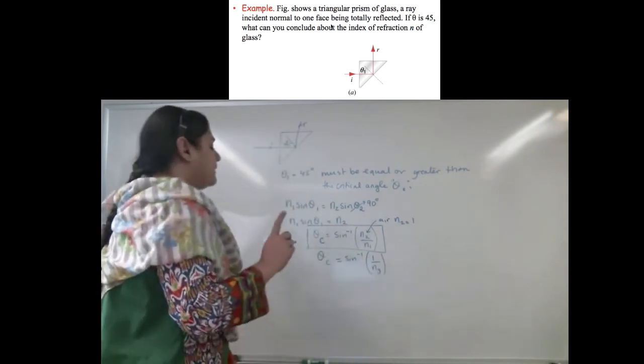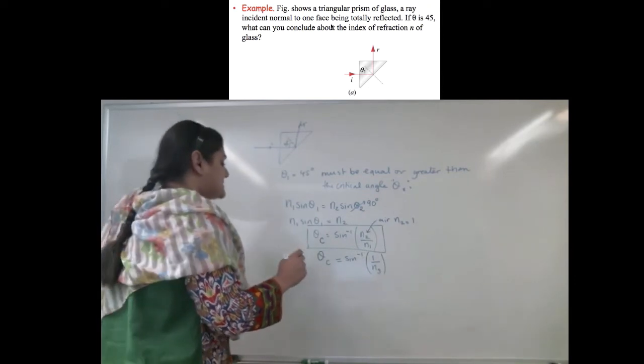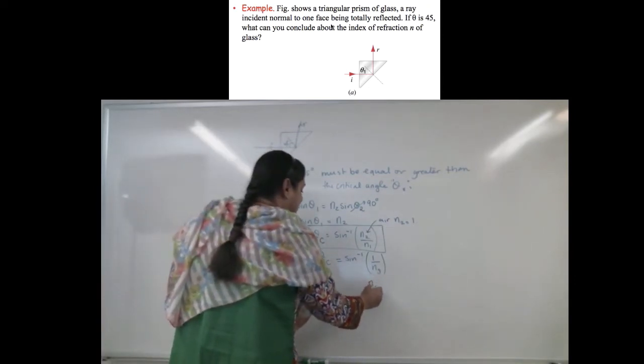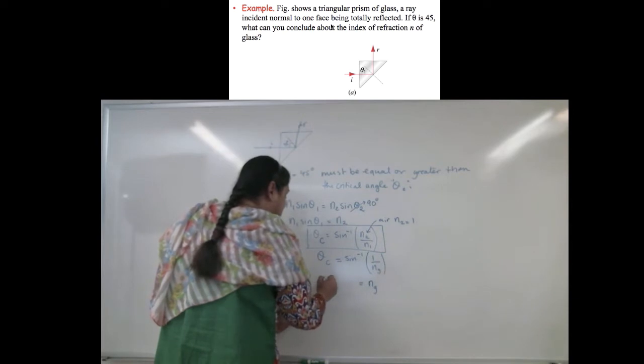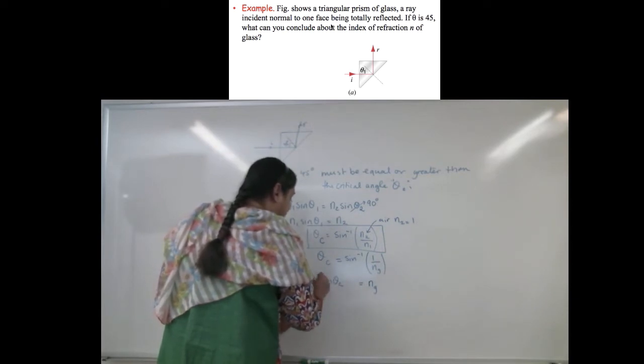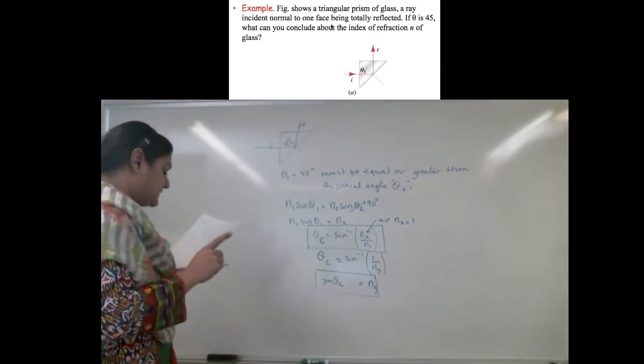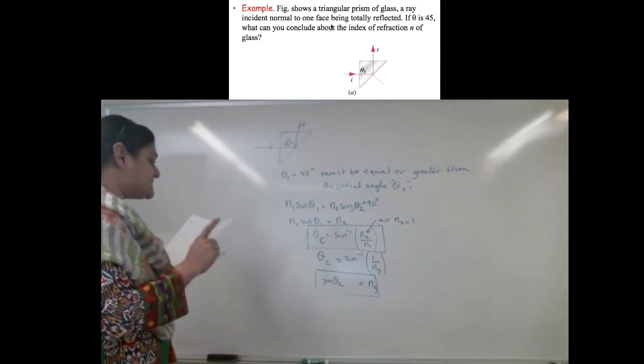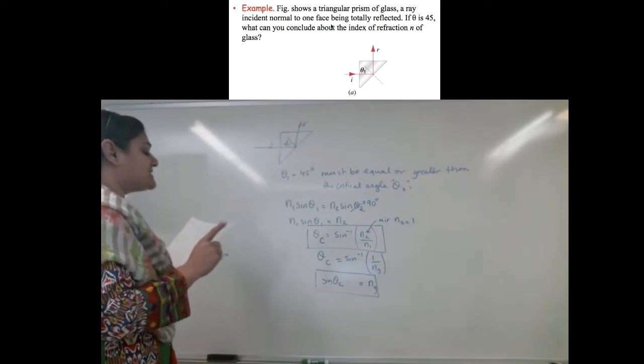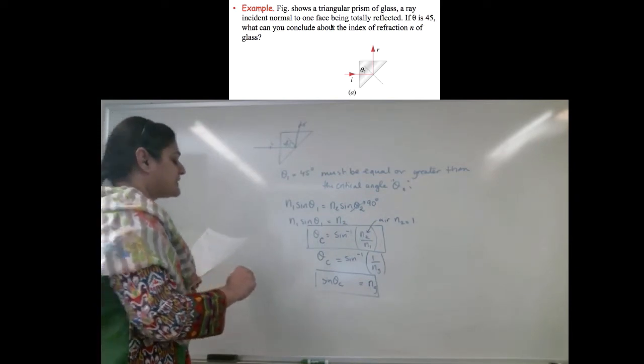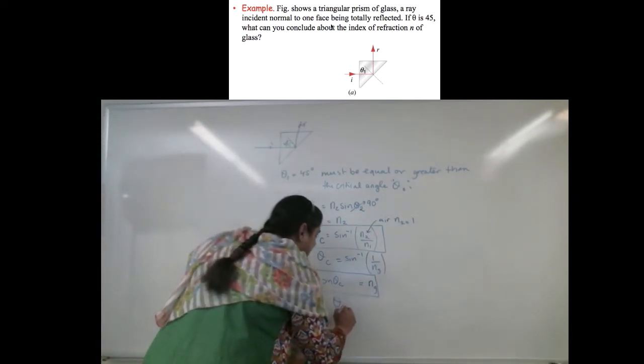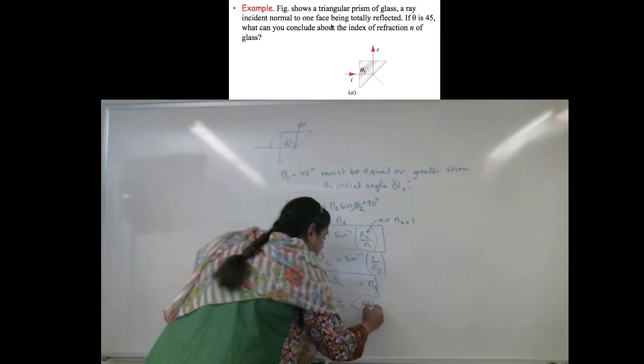Or, I can say N glass equals sine of theta c. That means that theta c must be less than 45 degrees.